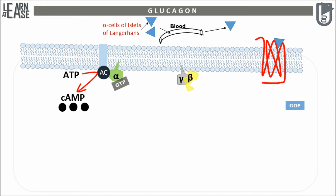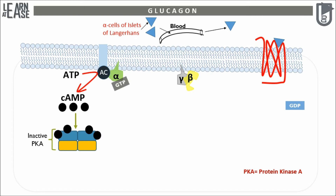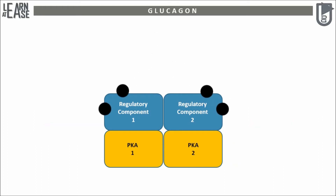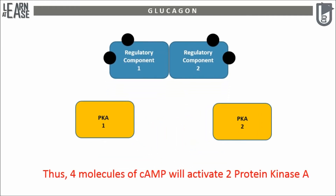There exists an inactive kinase enzyme named protein kinase A in the cytoplasm. Cyclic AMP will bind to this inactive enzyme and activate it. Inactive protein kinase A is a tetramer consisting of a duplicate of a regulatory protein subunit and a duplicate of the actual kinase subunit. Two cyclic AMP molecules will bind to each regulatory subunit, so in total four cyclic AMP molecules bind to two regulatory subunits. This will split the active protein kinase A from the inactive tetramer. Thus, in the entire process, four molecules of cyclic AMP are utilized to release two active protein kinase A molecules.